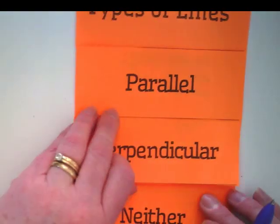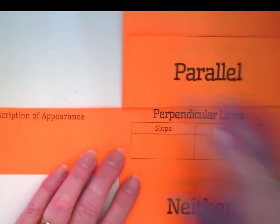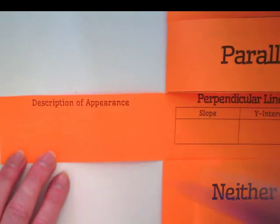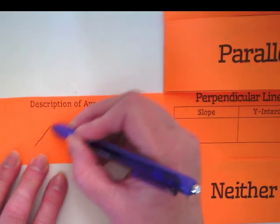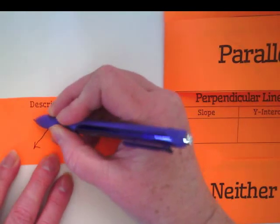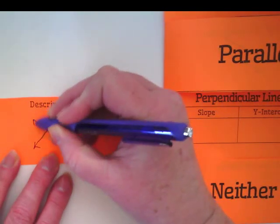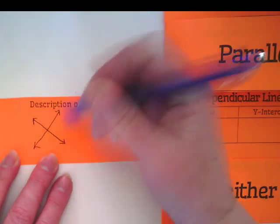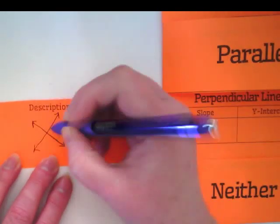Let's open this flip for perpendicular. We're going to draw what perpendicular looks like. As you guys stated, they are straight lines that cross at a 90-degree angle. And I want you to show that angle in there.